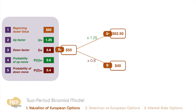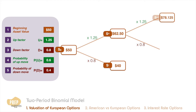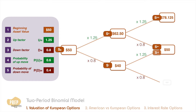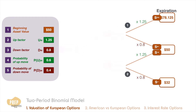If you were able to fully understand the one-period binomial model, you wouldn't have much problem with the two-period binomial model, which is simply an extension of the one-period model. Going back to our last example where the up factor is 1.25 and the down factor is 0.8, we get the possible stock prices at the end of the second period, which is the expiration date of the option. The two-period model can be seen as a combination of three single-period models.